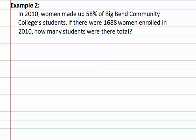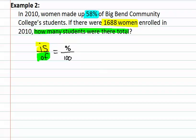Example 2: In 2010, women made up 58% of Big Bang Community College's students. If there were 1,688 women enrolled, how many students were there in total? Remember, we must identify each of the pieces. The percent is easy to find as it has a percent symbol. Next, we need to find the 'is' and the 'of' to finish filling out our proportion. The 'is' is the number of women. The 'of,' therefore, is the total — how many students were there.